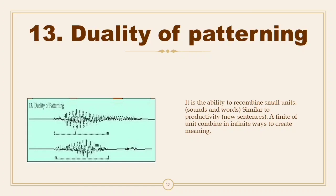Thirteenth: Duality of Patterning. It is the ability to recombine small units — sounds and words — similar to productivity, to create new sentences. A finite set of units can be combined in infinite ways to create meaning. This means that the discrete parts of a language can be recombined systematically to create new forms. While productivity refers to the ability to generate novel meanings, duality of patterning refers to the ability to recombine small units in different orders. Hockett developed this phrase to express that discrete units at one level, such as sounds, can be recombined to create different kinds of units at a different level, such as words.